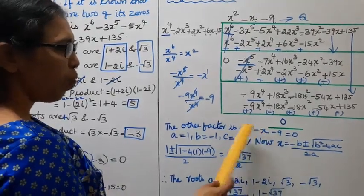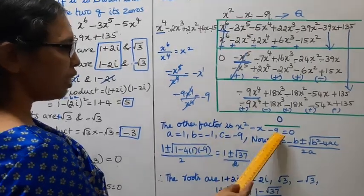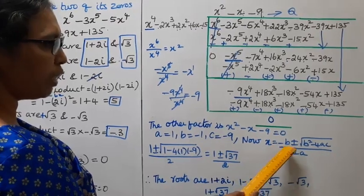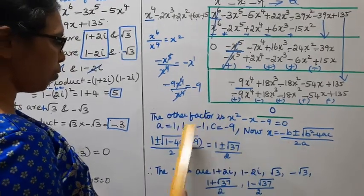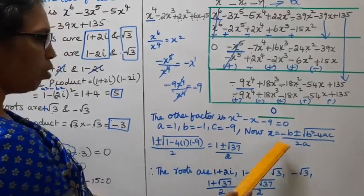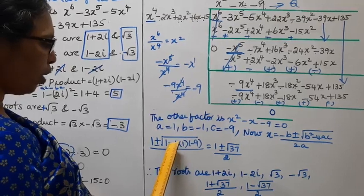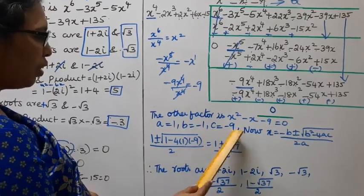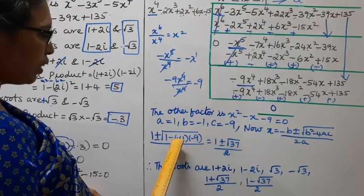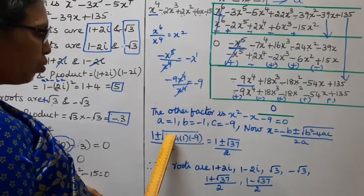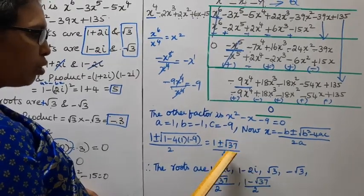To factorize x²-x-9 = 0, we use the quadratic formula. Here a=1, b=-1, c=-9. So x = (-b ± √(b²-4ac)) / 2a = (1 ± √(1 + 36)) / 2 = (1 ± √37) / 2.